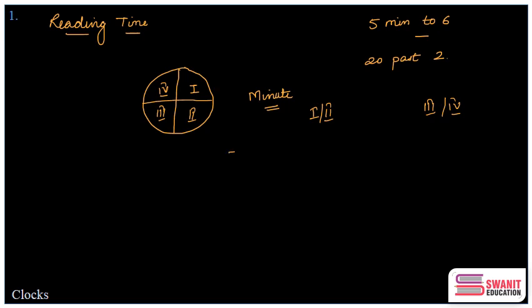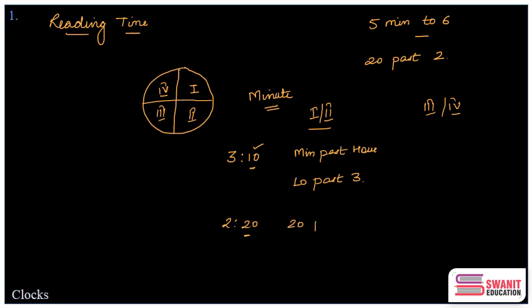Let me take an example. Suppose the time is 3:10. The minute hand certainly lies in the first quadrant. When the minute hand is in the first or second quadrant, we read the time as 'minutes past [hour].' So in this case, we say it is '10 past 3.' Let me write one more example: it is 2:20. Since 20 is in the second quadrant, we write it as '20 past 2.' A very simple, basic concept, but we must know this before attempting a clock question.